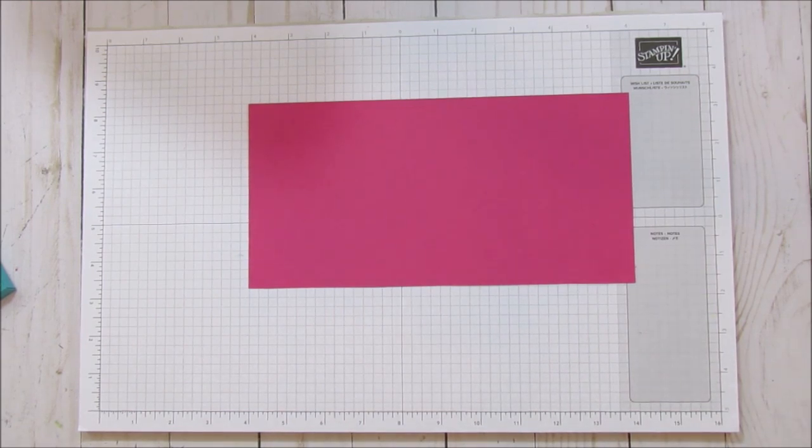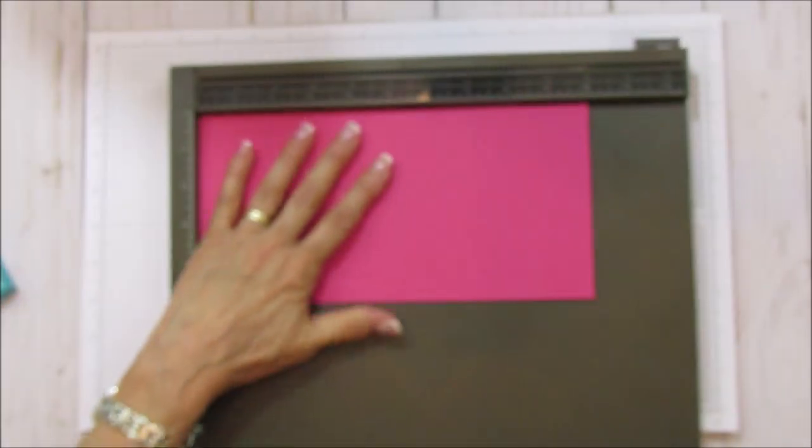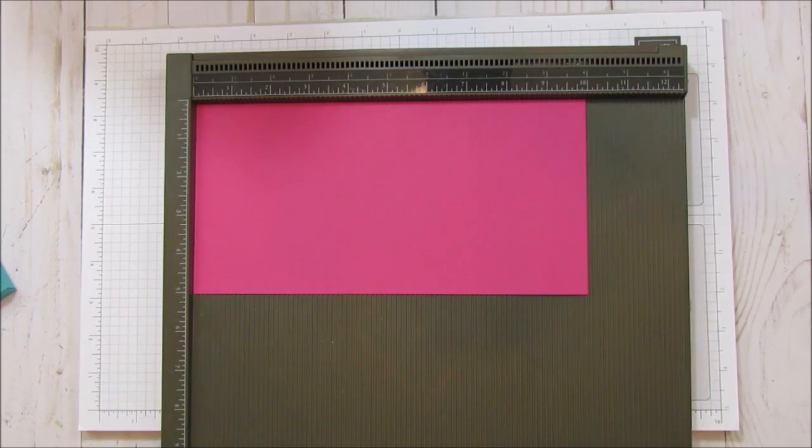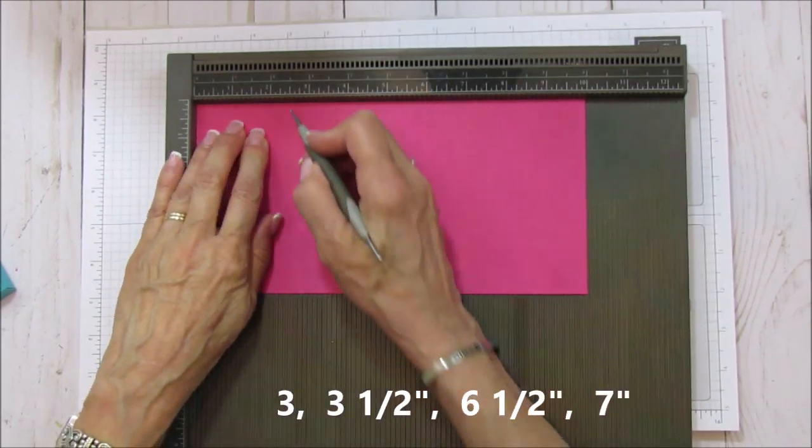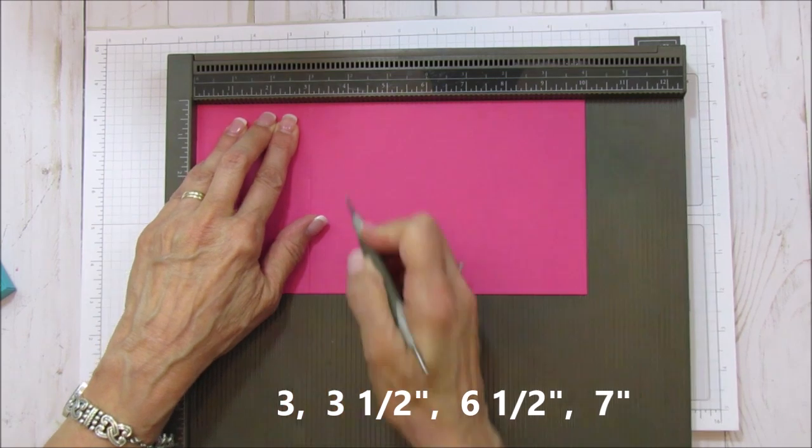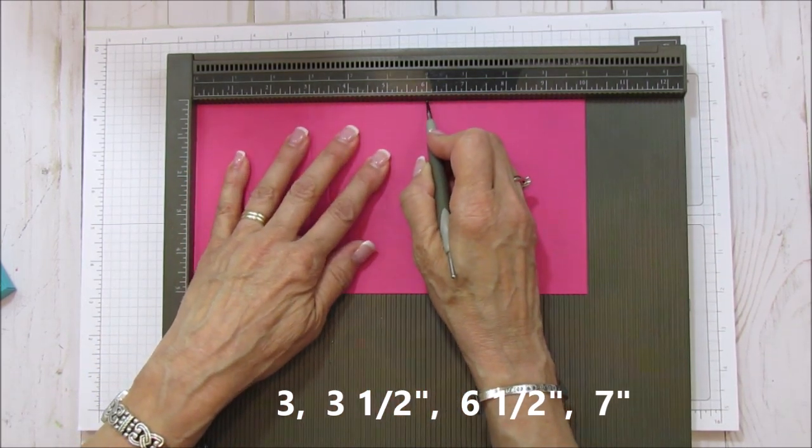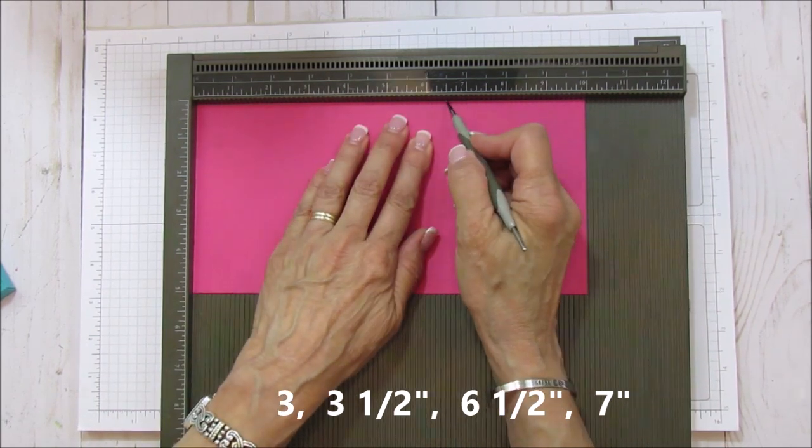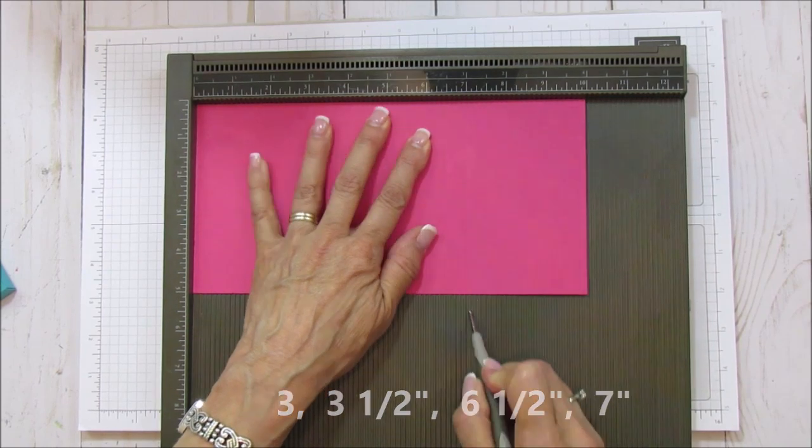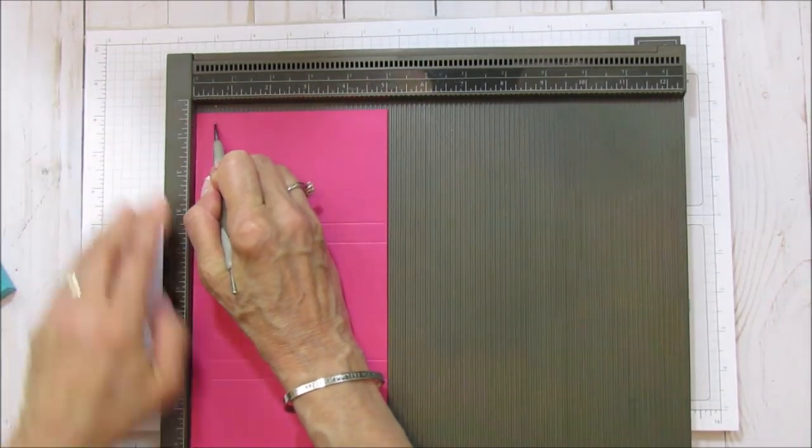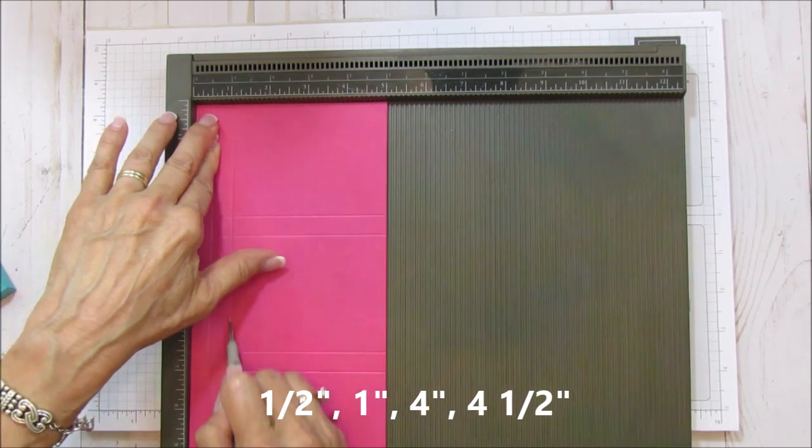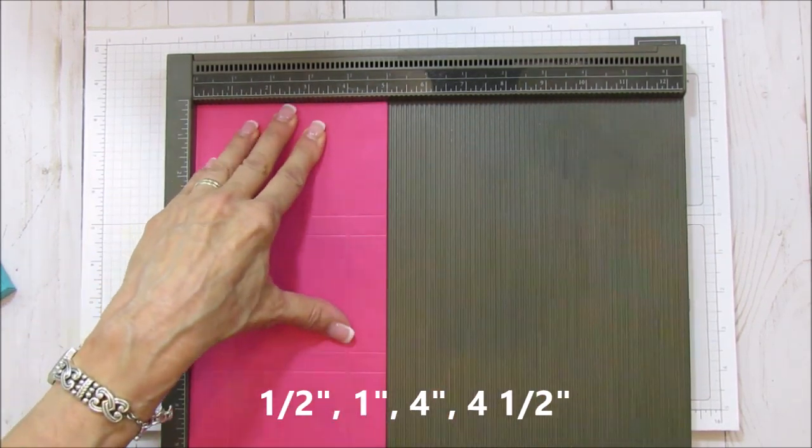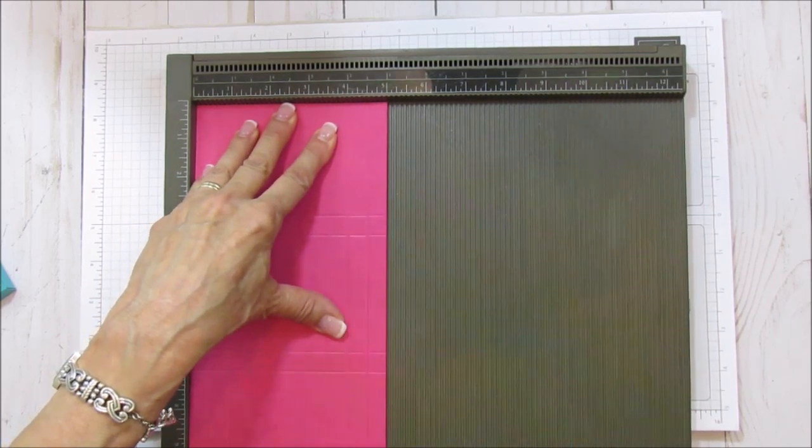So we are ready to get started here. So I'm gonna get my Simply Scored and we're gonna score this. So this is the ten inch side, sorry for the reflection, but I had to put on my light above because it's kind of rainy looking outside. So this is the ten inch side, we're gonna score it at three, three and a half, six and a half, and seven. And then we're gonna turn it and you're gonna score it at one half, at four and four and a half. That is it. Like I said, these go really quick and easy.